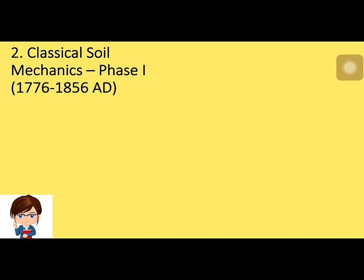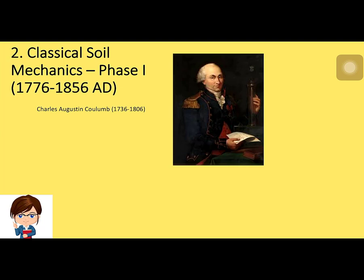The second period is classical soil mechanics phase 1, from 1776 to 1856 AD. In 1776, Coulomb used calculus to determine the true position of the sliding surface in soil behind a retaining wall, using the laws of friction and cohesion for solid bodies. Jack Frederick Français (1775–1833) and Claude-Louis-Marie-Henri Navier (1785–1836) were also notable contributors.